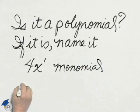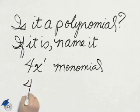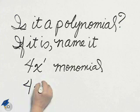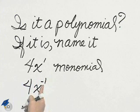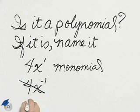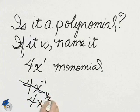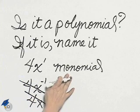This would not be a polynomial. If I had 4x to the negative 1, that negative ruins it, so that would not be a polynomial. If I had 4x to the 1 half, the 1 half would ruin it. It's a monomial with one term.